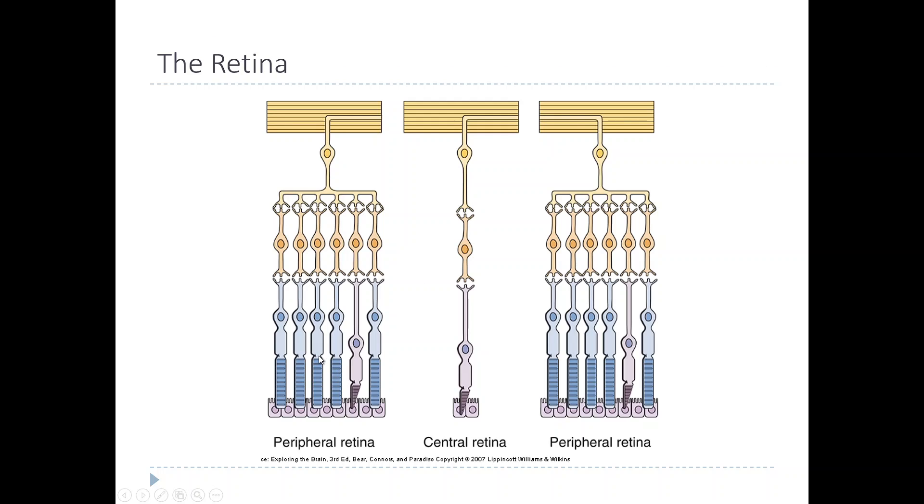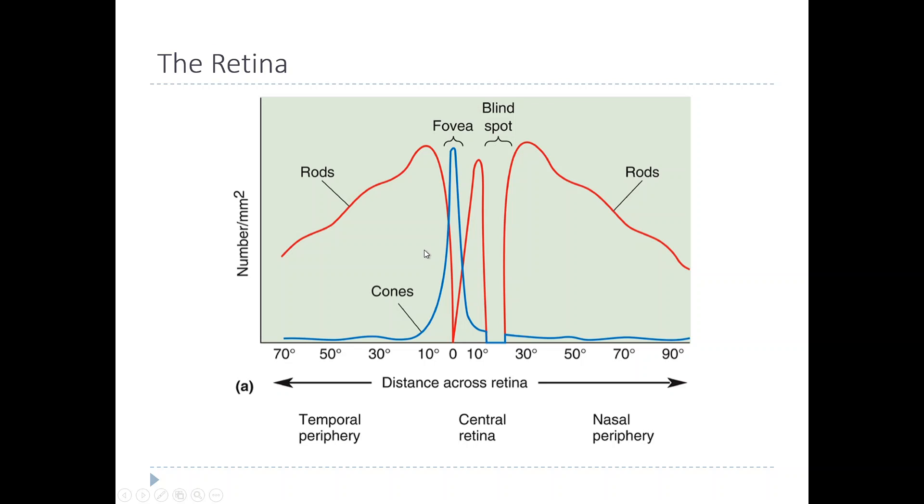But in the peripheral retina, further away from the center, you see a greater proportion of rods to cones. The bipolar cells still are connected to their photoreceptors, but then each retinal ganglion cell gets its input from multiple bipolar cells.